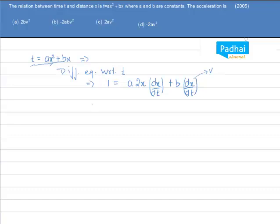So that means 1 = 2axv + bv. From here I can take v as common, so v = 1/(2ax + b). Let us mark this as equation 1.